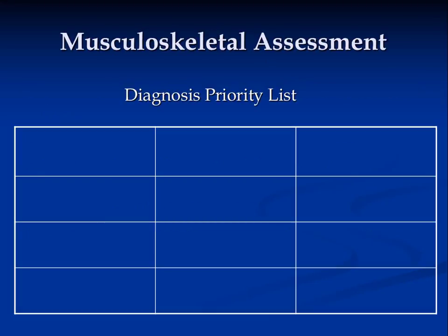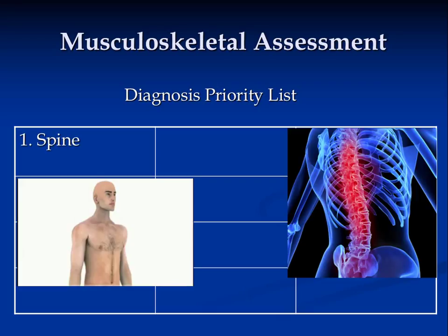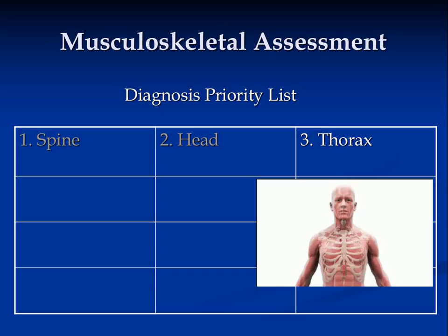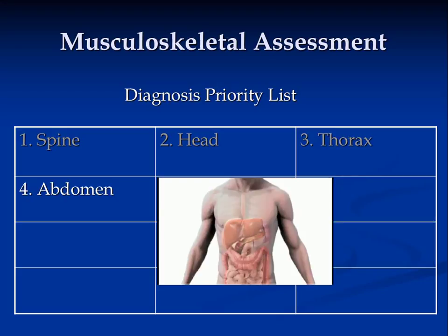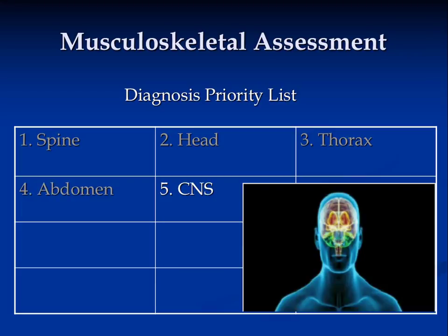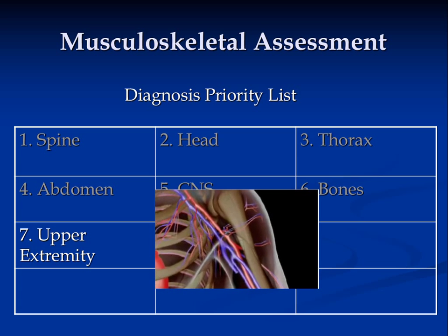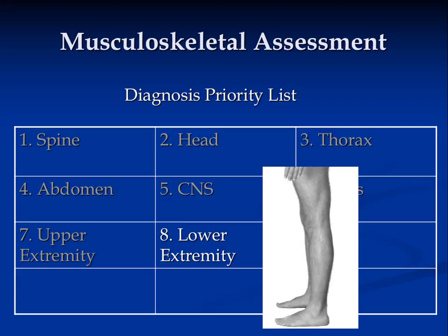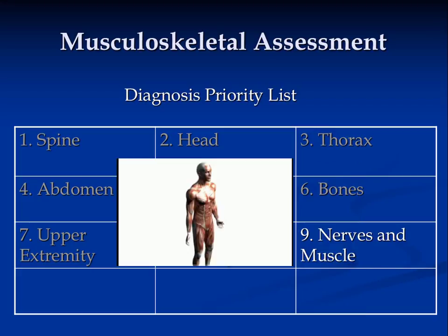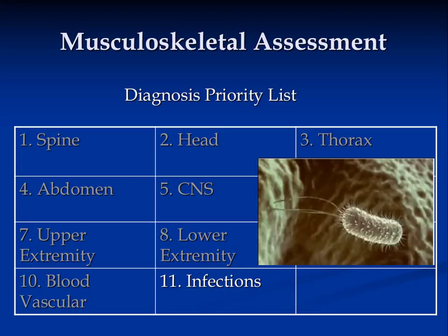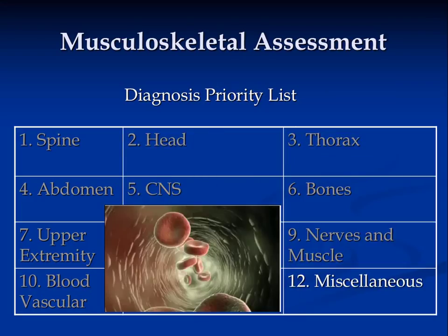We begin with looking at our diagnosis priority list. First on that list, and most important, are those problems related to the spine. Next, those conditions related to the head, the thorax and thoracic contents, the abdomen and abdominal contents, the central nervous system, bones, the upper extremity, the lower extremities, nerves and muscles, the blood vascular system, infections, and finally, any miscellaneous issues.